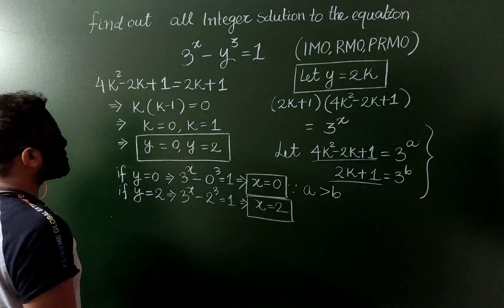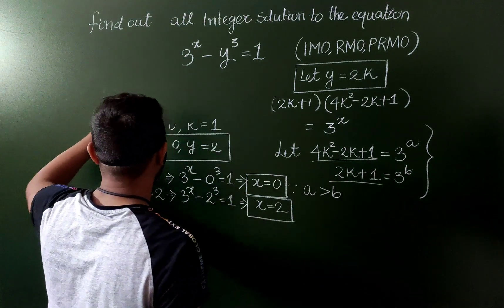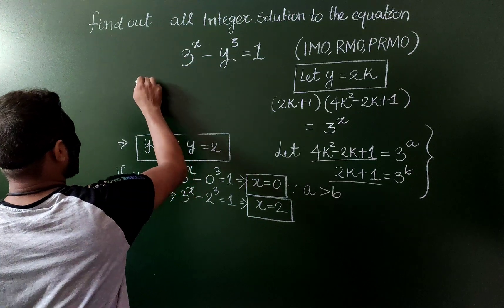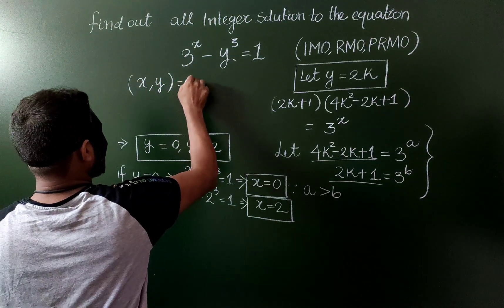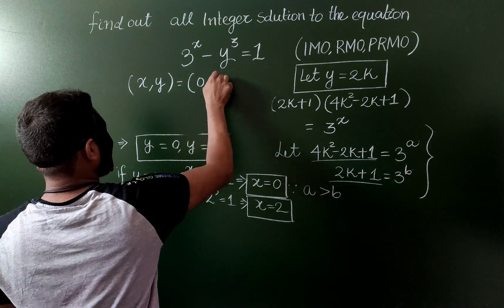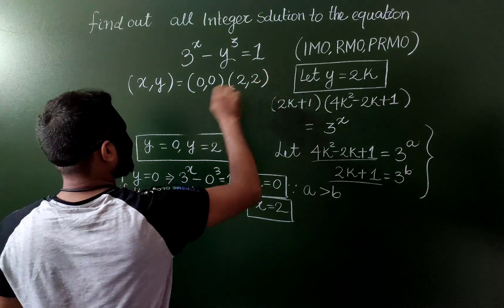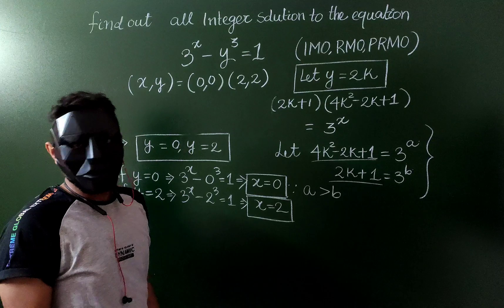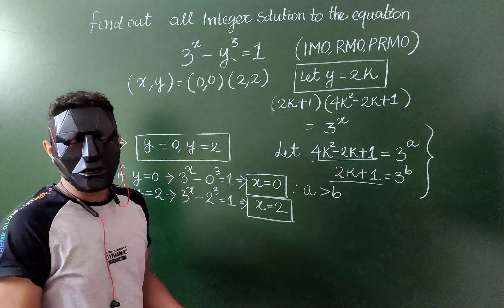So here clearly you see that we got only 2 values for x and y and both are equal, so finally the solution to the above equation in integer is either 0 and 0, or 2 and 2. This is for today. I hope you like it, and if you have any alternative method, comment down in comment below.